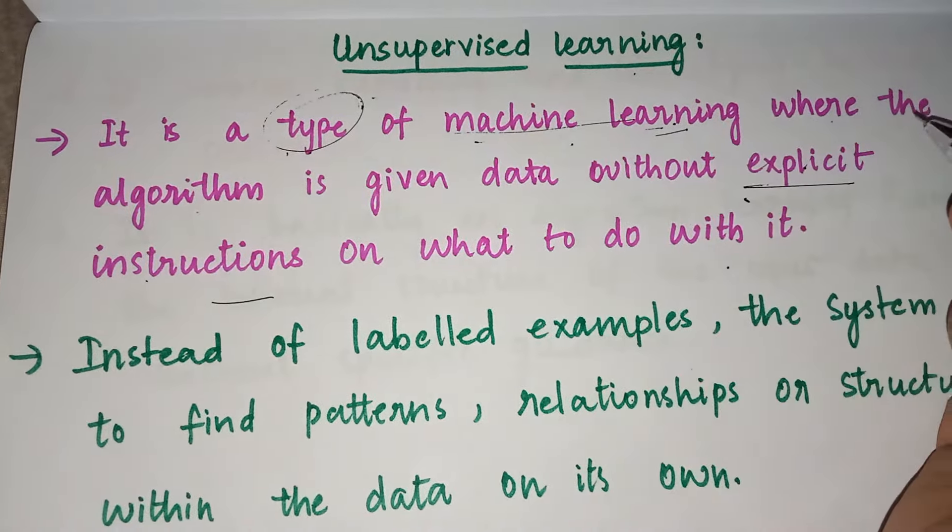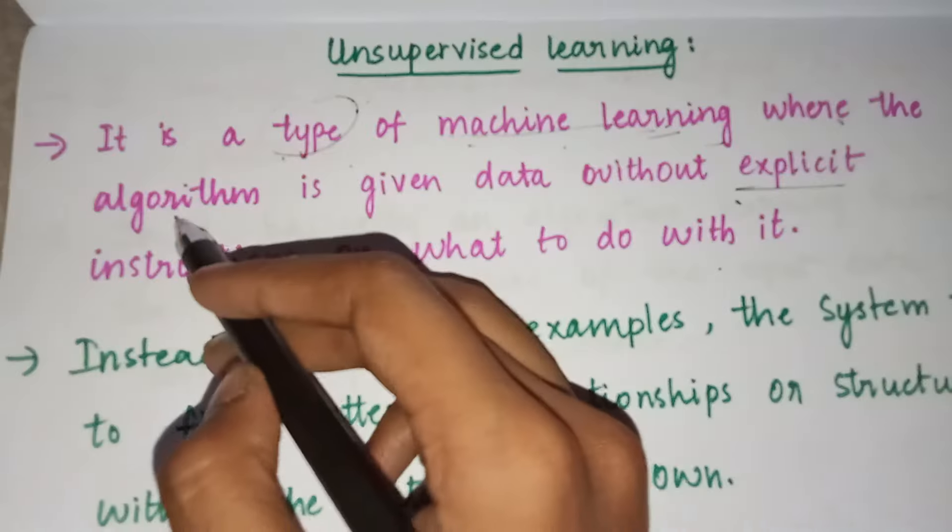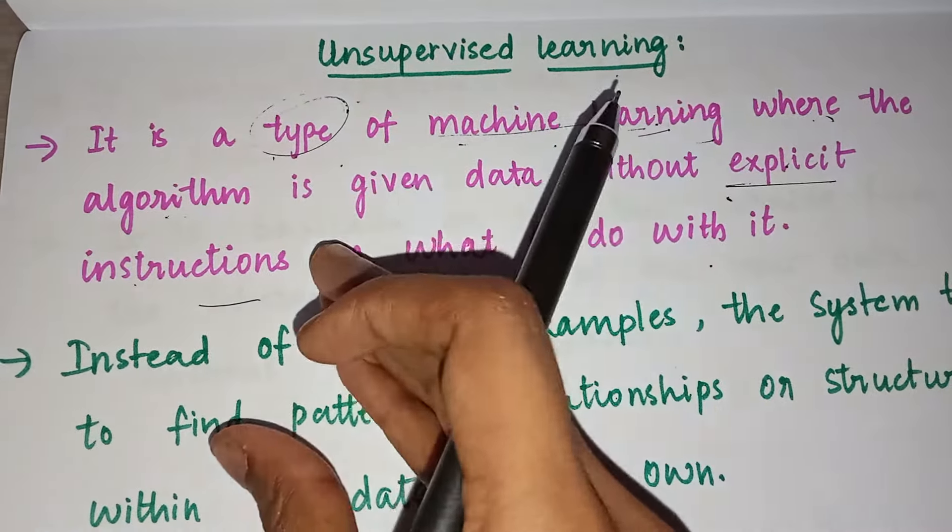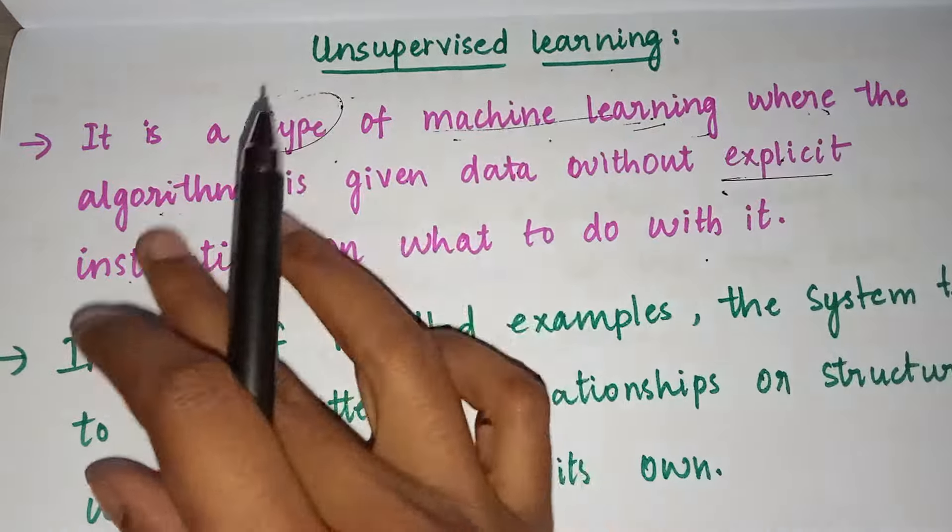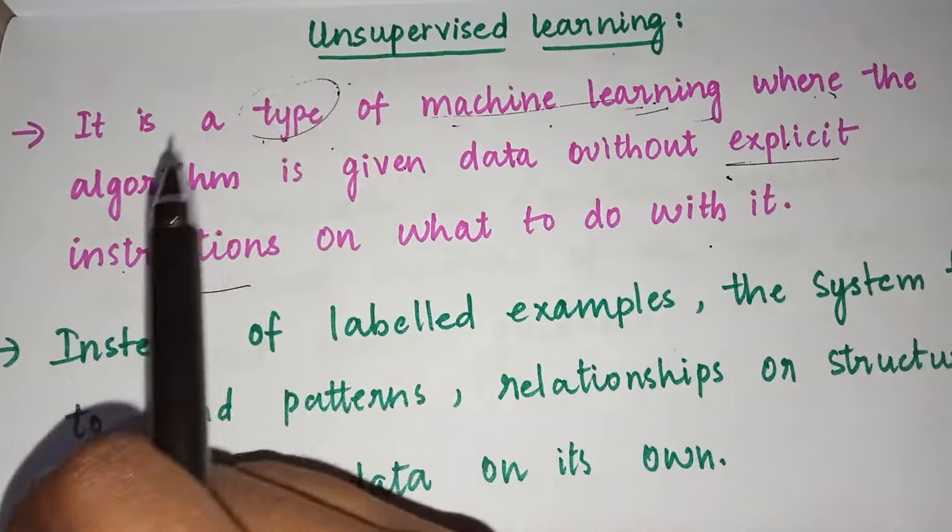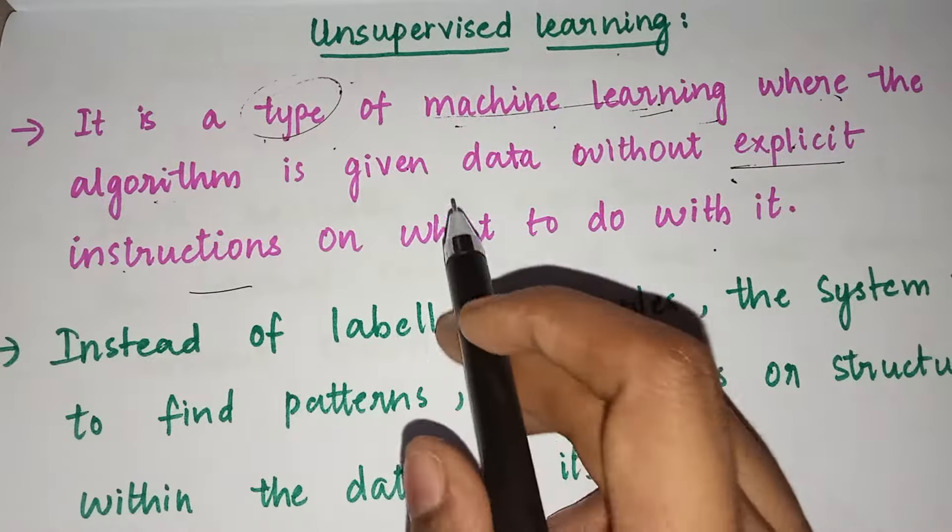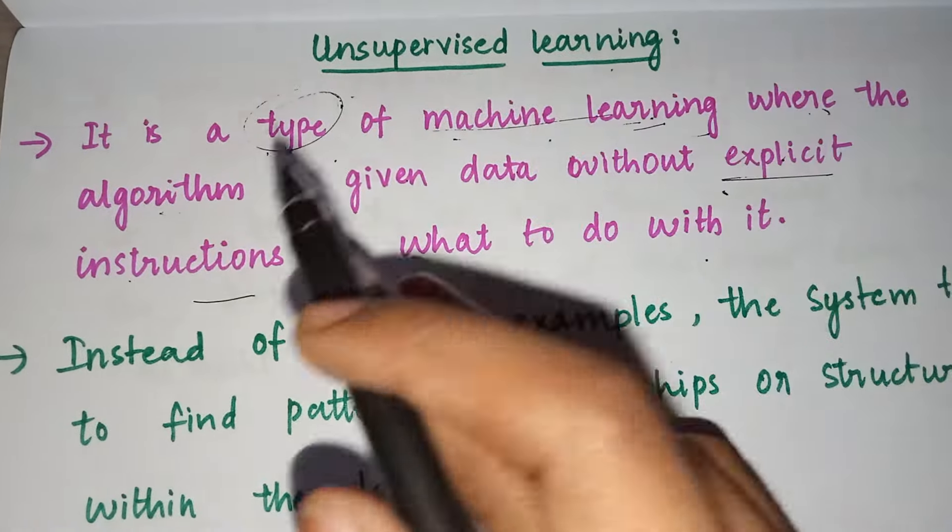of machine learning where the algorithm is given data without explicit instructions, which means they're not given the direct instructions. Indirectly they are being given the instructions